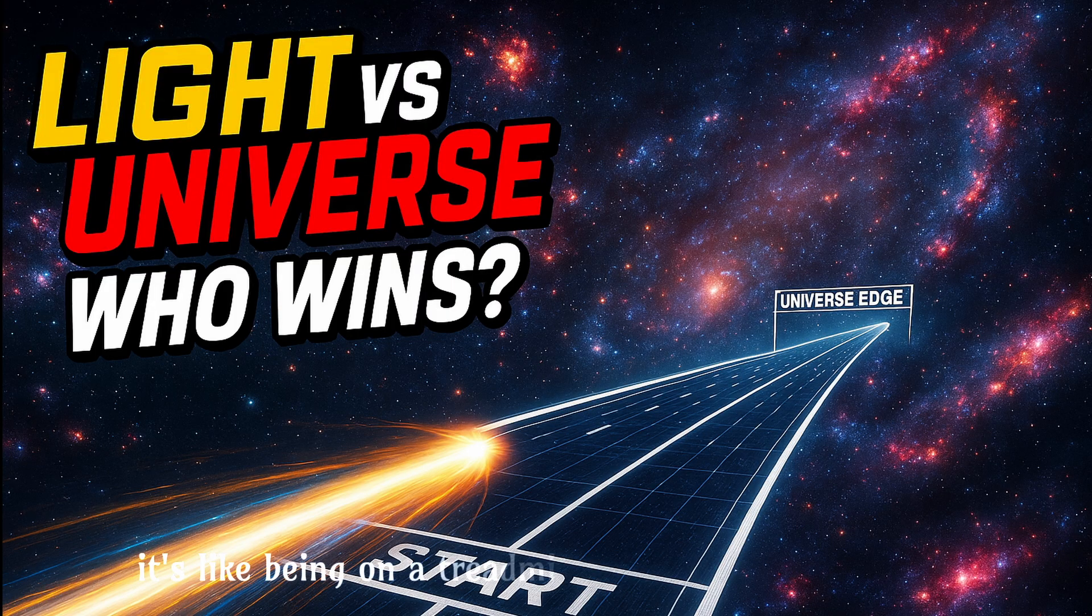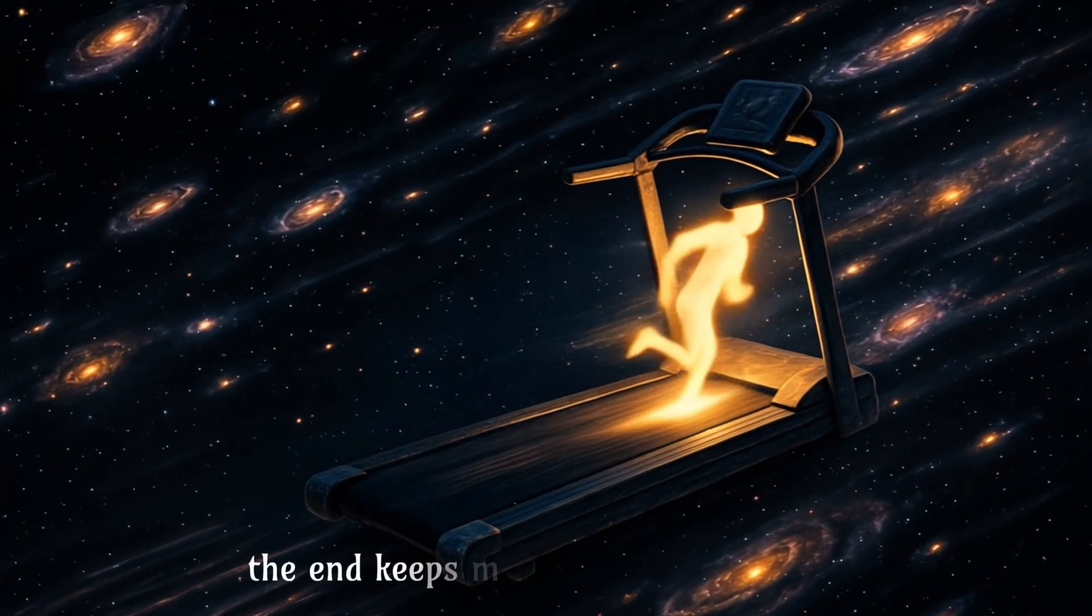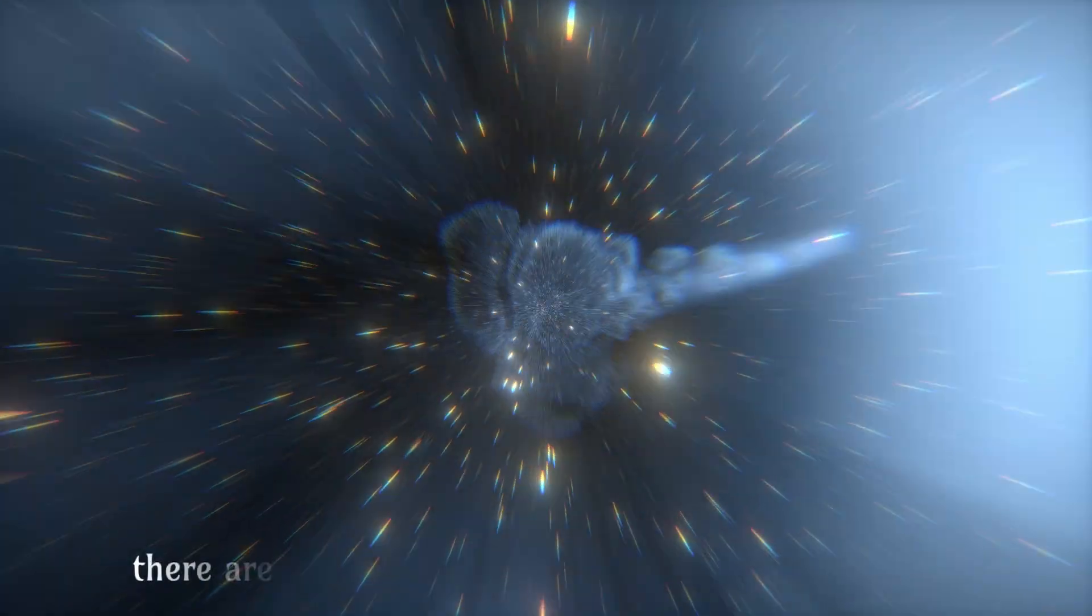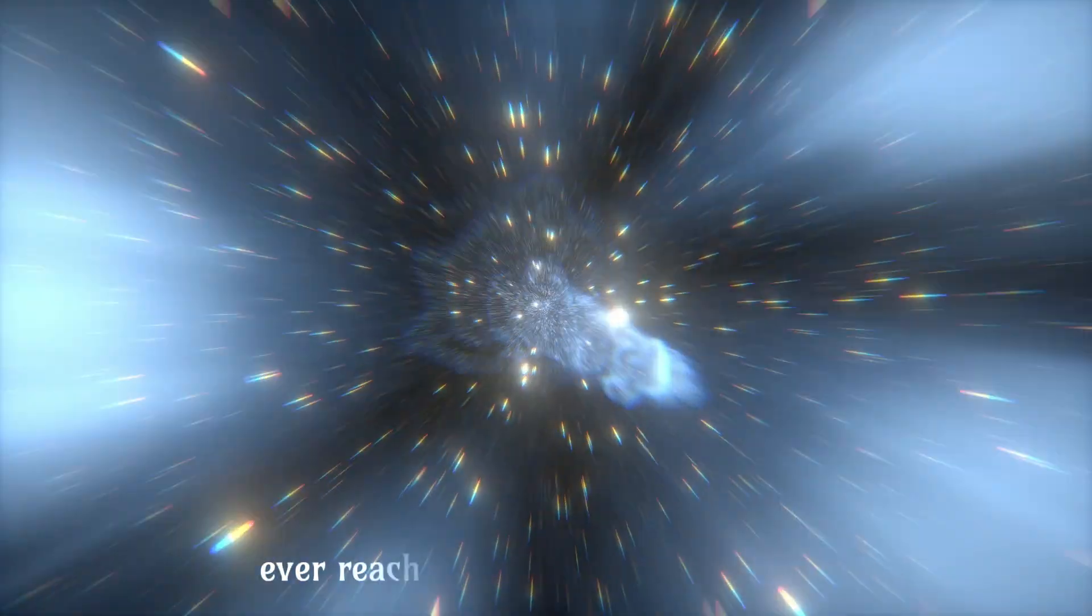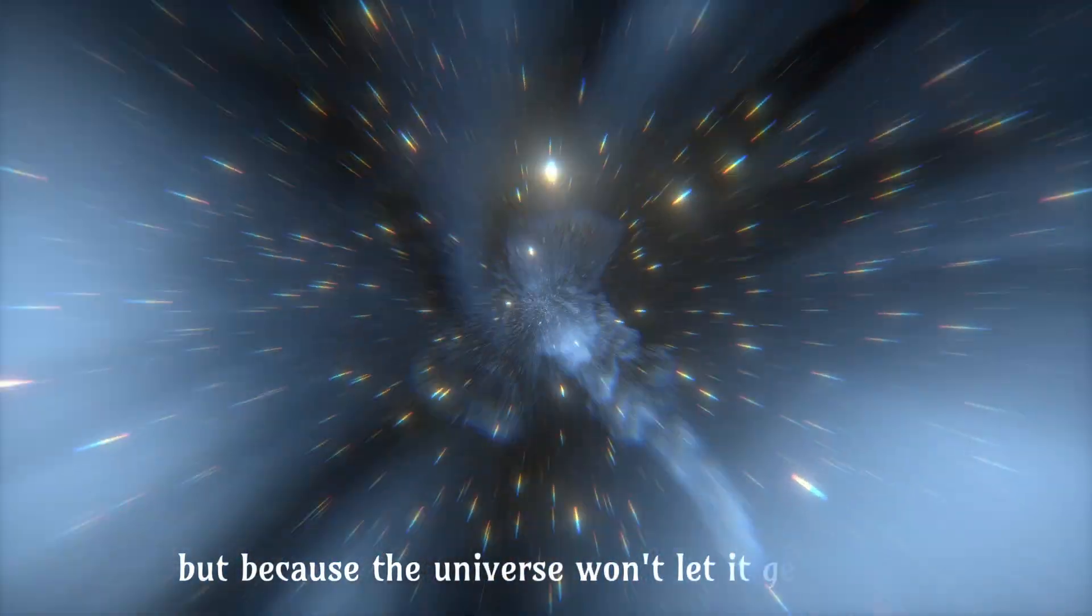And at extreme distances, space is expanding faster than light can travel through it. It's like being on a treadmill that keeps speeding up. No matter how fast you run, the end keeps moving away from you. So there are places in the universe that light will never, ever reach. Not because light is slow, but because the universe won't let it get there.